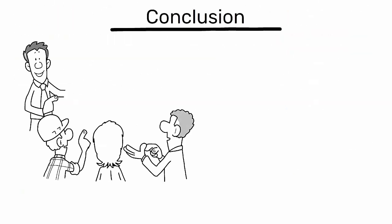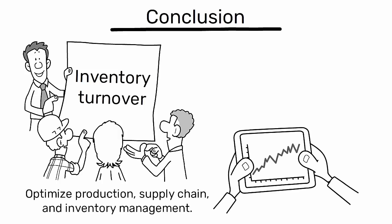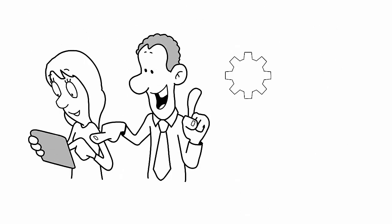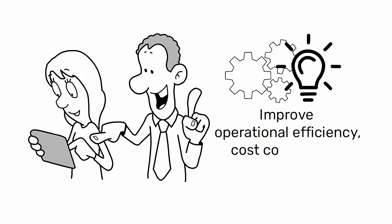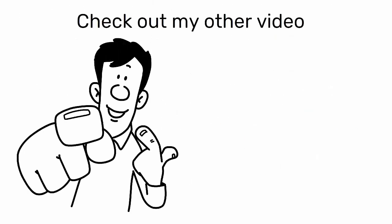Understanding inventory turnover helps industrial engineers optimize production, supply chain, and inventory management. Analyzing this metric provides actionable insights to improve operational efficiency, cost control, and overall profitability. If you found this video helpful, make sure to check out my other videos on inventory management techniques, including just-in-time, economic order quantity, and more.